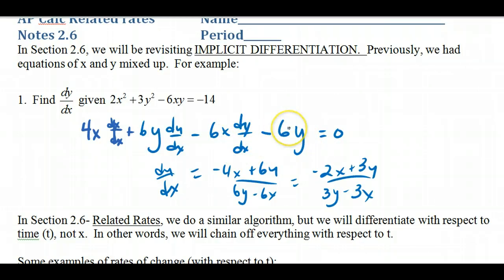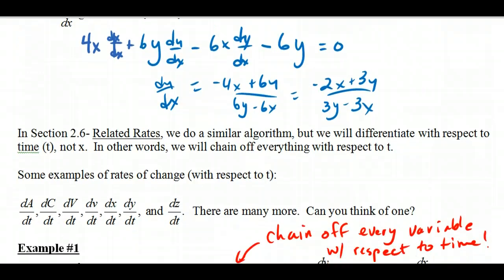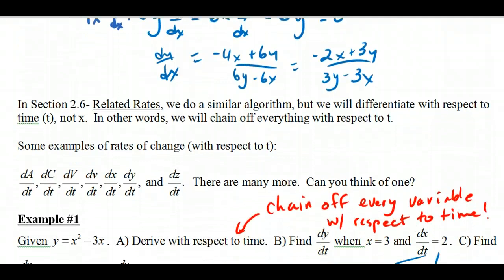We chain off all the y's that we have and then solve for dy/dx. With related rates, instead of differentiating with respect to x, we're going to be differentiating with respect to t. So if I see an x I'm going to have to chain it off, and if I see any other variable besides t then I'm going to have to chain it off. That's what we're doing with related rates.